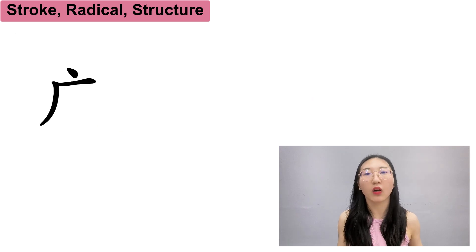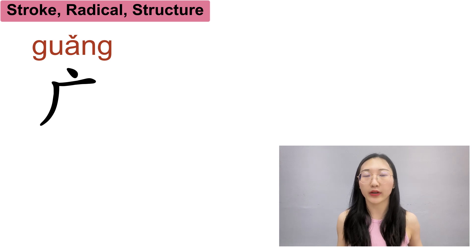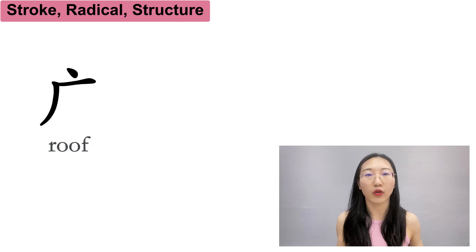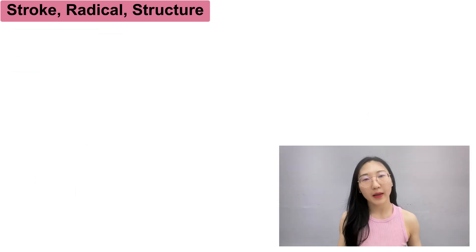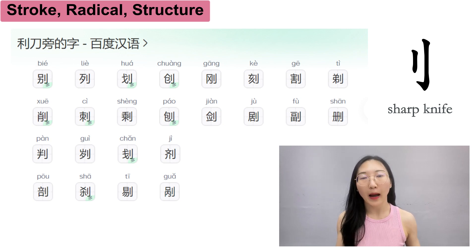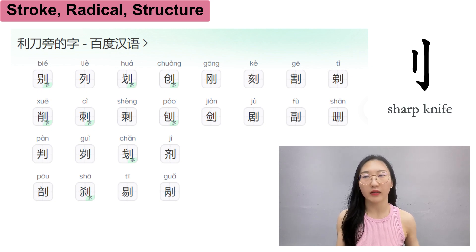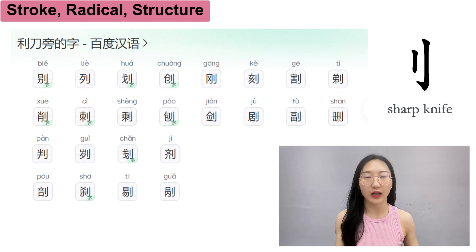The same applies to the radical 广字旁. Actually, 广 is already a character itself meaning 'white,' but as a radical it stands for 'roof' or 'ceiling.' So characters with radical 广字旁 usually refer to something related to construction. Another example is characters with the radical 立刀旁, loosely translated as 'sharp knife,' so many characters with this radical usually have meanings around sharp, knife, or cut, and are pronounced similarly to their sound component.